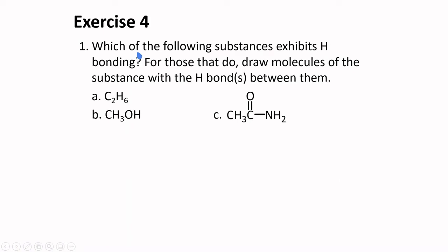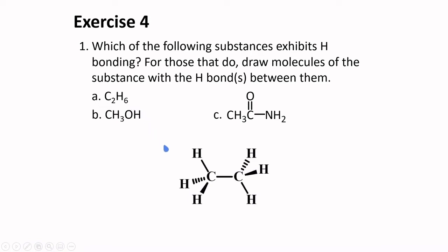Which of the following substances exhibits hydrogen bonding? For those that do, draw molecules of the substance with the hydrogen bonds between them. Letter A is ethane. The molecular structure of ethane has no oxygen, nitrogen, or fluorine present; therefore it does not exhibit hydrogen bonding.